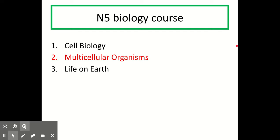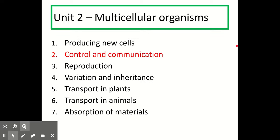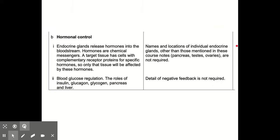We're still on Unit 2 Multicellular Organisms and this is Topic 2. Here's the SQA Core Specification, our Managed Knowledge section for this topic. Remember, this is all the bits of knowledge and content that you can be tested on in a test or exam at this level. This video only covers Part B, so for Part A on the nervous system, you'll need to watch the separate video. As you watch, feel free to pause or go back and re-watch sections if you need to.